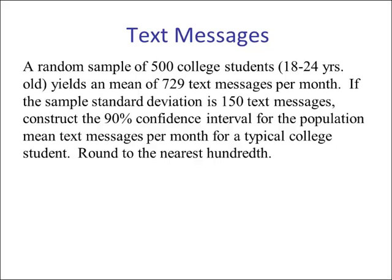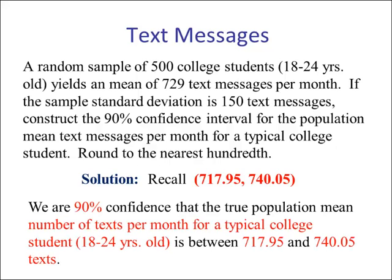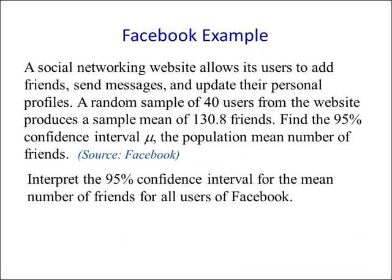Example 1 — text messages: we want to construct a 90% confidence interval for the population mean number of texts per month for a typical college student aged 18 to 24. We computed the confidence interval in a previous video, so now we interpret it: we are 90% confident that the true population mean number of texts per month for a typical college student aged 18 to 24 is between 717.95 and 740.05 texts.